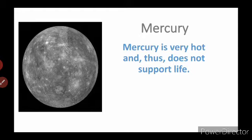We will start from Mercury. Mercury is very hot and does not support life. Mercury is the nearest planet to the sun, and on Mercury there is no life because of the hotness.